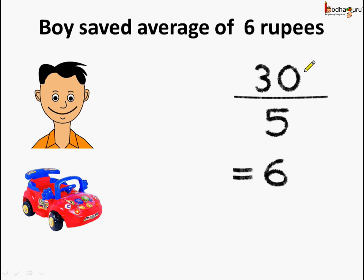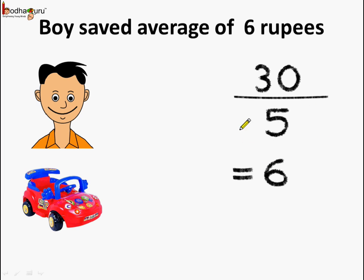How? If we add up all the amounts of the 5 days it amounts to 30 rupees, and the number of days in which he was able to collect was 5. So if we divide 30 by 5 it becomes 6. Thus he was on an average able to save rupees 6 per day. This is known as the concept of average — where we take the total amount and divide it by the total number of days.